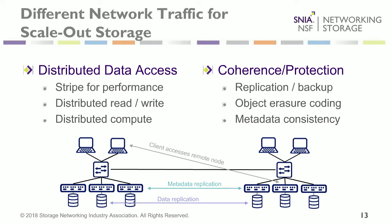Regarding the different networks in scale-out storage and the network traffic involved: why is there more east-west traffic? North-south network traffic usually means from application servers or users' desktops to the storage. East-west tends to be between servers, between storage controllers, or between metadata servers — it goes between storage nodes, which are typically left and right in diagrams, where up to the client is north-south by convention.